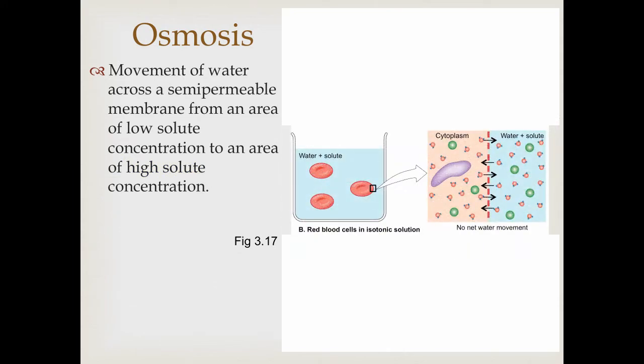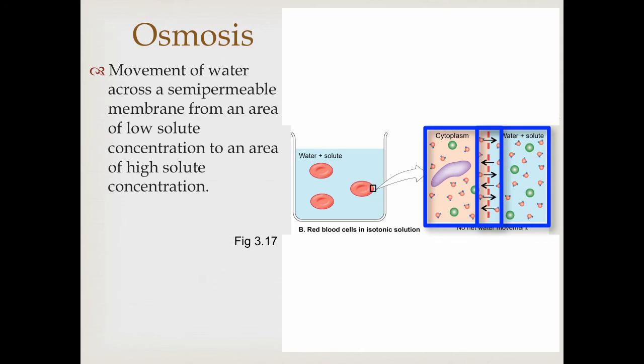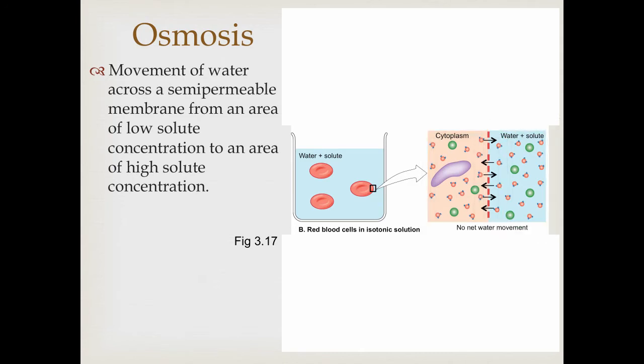Let's say we had a beaker of water with some red blood cells. If this water was an isotonic solution — meaning it has the exact same solute concentration in the water as inside the cytoplasm of the cell — water is going to be moving back and forth across the cell membrane at about the same rate. There's no net movement of water either inside or outside the cell, because the solute concentration is the same on either side. That's what 'iso' means — isotonic refers to a solution that is the same inside as outside the cell.